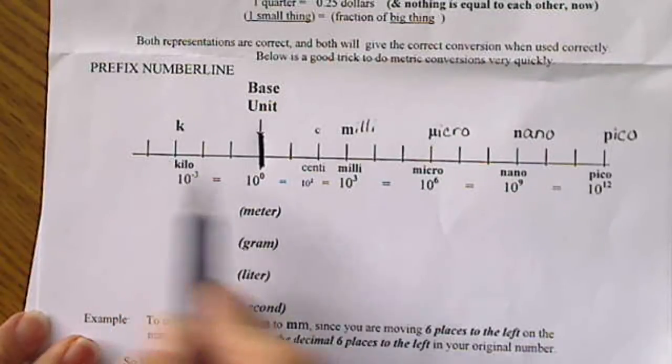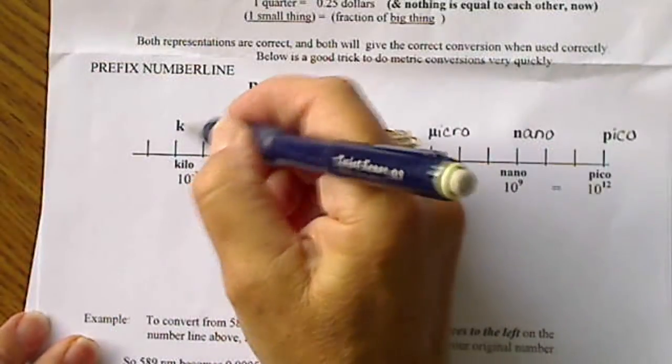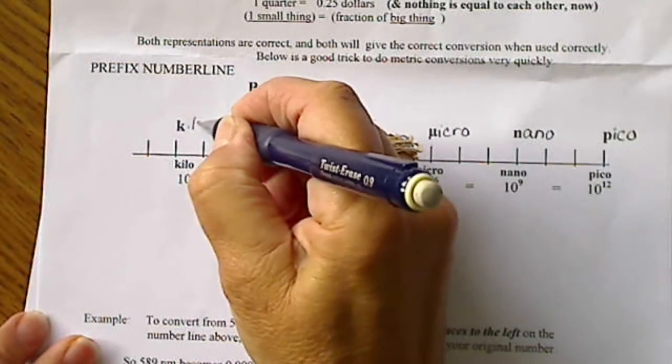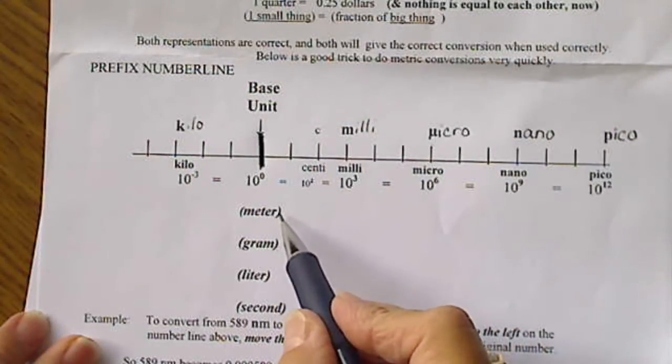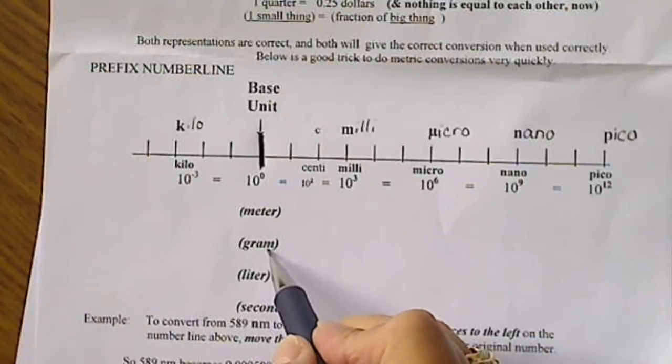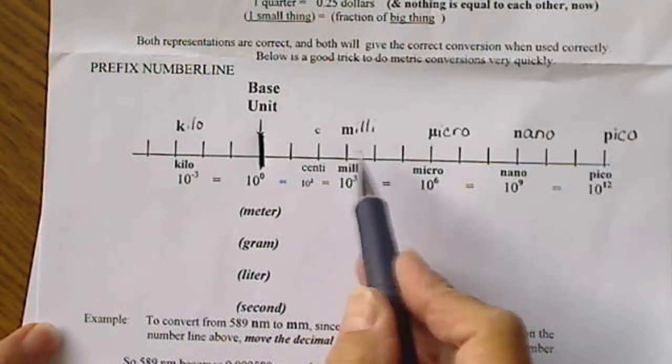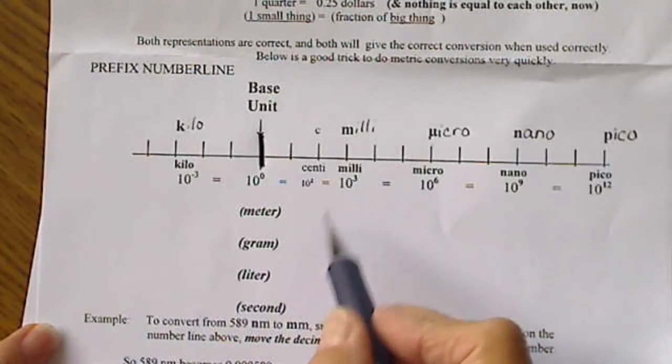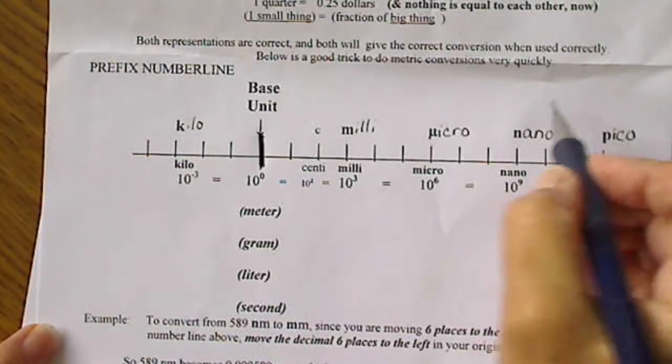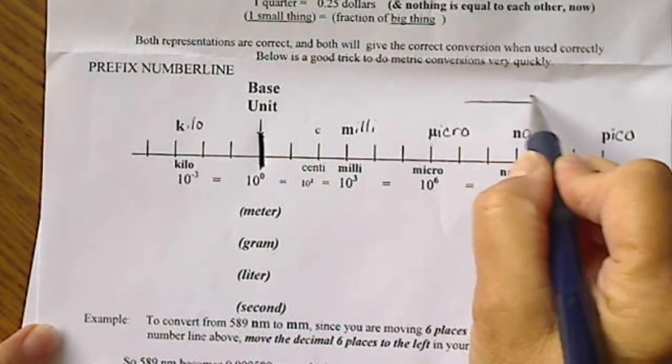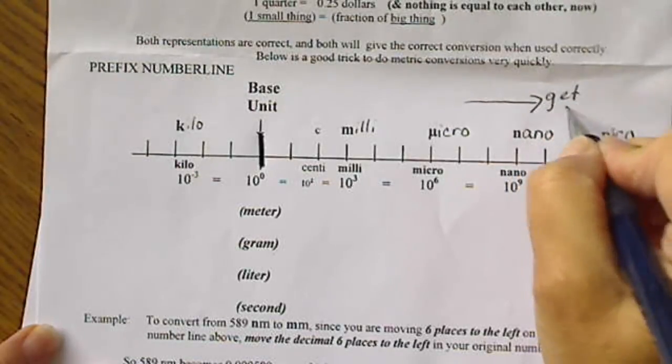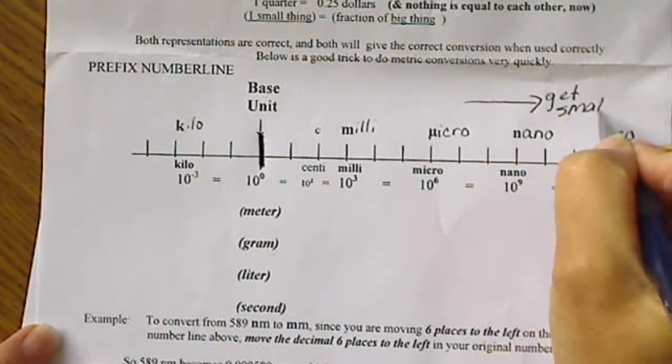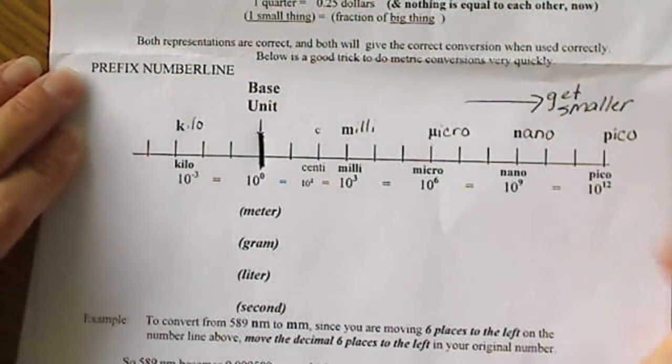Kilo is going to be on the other side of our base unit. And kilo is a larger unit. So we weigh on the order of kilograms. Aspirin, for example, is going to be on the order of milligram. So as this prefix number line goes to the right, the units get smaller.